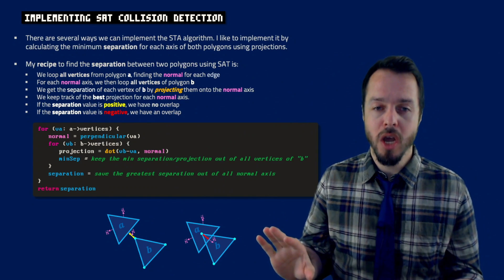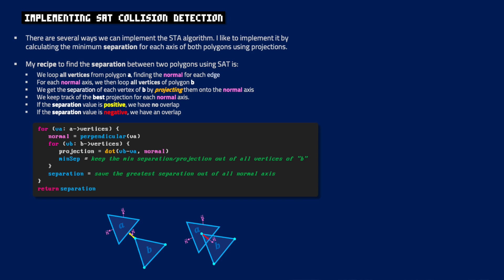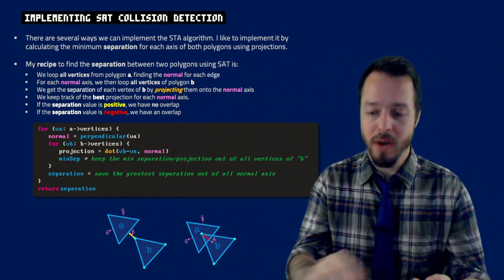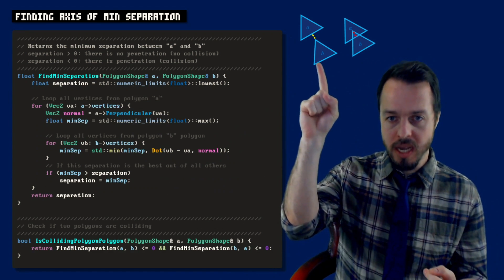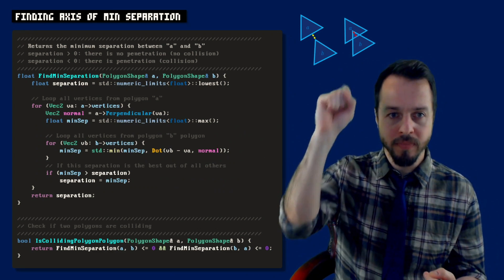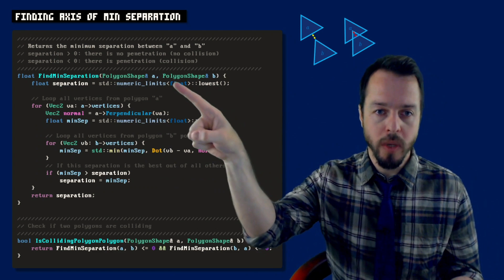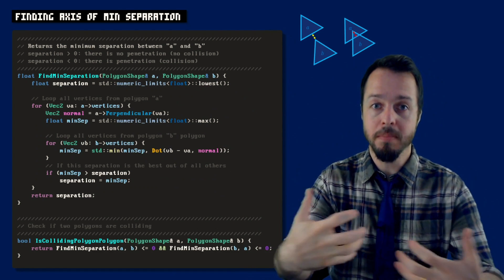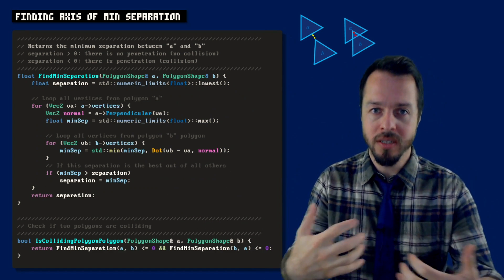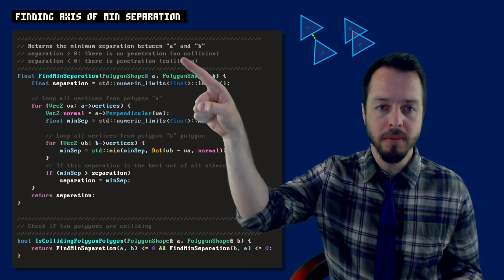This is a very high-level overview of my approach to the SAT algorithm. I like to think about the separation between the bodies, using projection onto the normal axis via the dot product. The output is a number that is positive or negative depending on whether the two convex polygons are apart or overlapping. Now I'm going to show you the C++ implementation. The function is called find minimum separation, receiving a reference to polygon A and a reference to polygon B. If the separation is greater than zero, we have no penetration — no collision; if it is negative, there is penetration — there is collision.